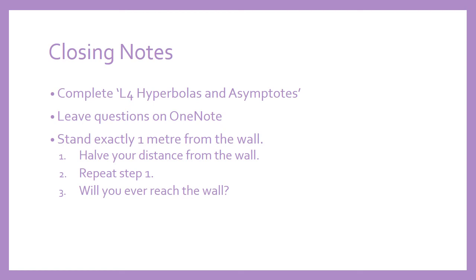So stand a meter from a wall, approximately, as long as you're about a meter. Then halve your distance from the wall. Halve your distance again. If you keep exactly halving your distance, will you ever reach the wall? Now that's a tricky question, but that is the concept of asymptotes. So have fun. Remember that sometimes we'll never reach a point, but we can still get very close.